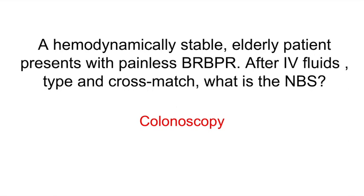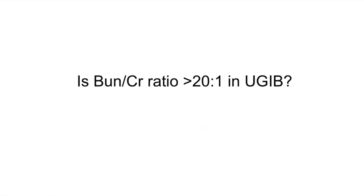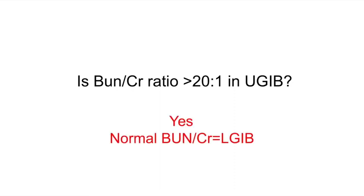Is the BUN-to-creatinine ratio greater than 20 to 1 in upper GI bleeds? Yes. However, in lower GI bleeds, it is normal. That's an important fact to remember: BUN-to-creatinine ratio greater than 20 to 1 — think upper GI bleeds. If it's a normal ratio, think lower GI bleeds.